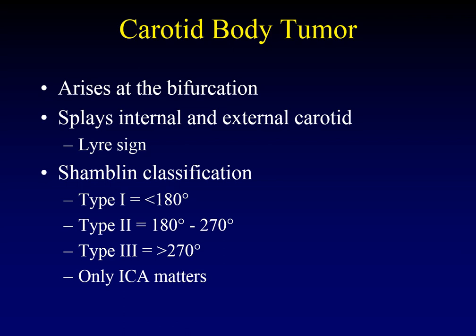The radiologic corollary uses the circumference around which the internal carotid artery is surrounded by tumor. If the tumor abuts the internal carotid artery less than 180 degrees of its circumference, we call that a type 1. If it is 180 to 270 degrees — half to three-quarters of the way around — that's a type 2. If it goes more than 270 degrees, essentially encasing the internal carotid artery, that's a type 3. Only the internal carotid artery matters for the Shamblin classification; you can sacrifice the external carotid artery.